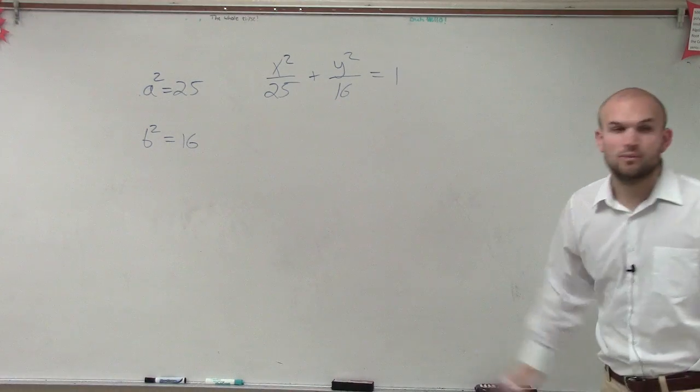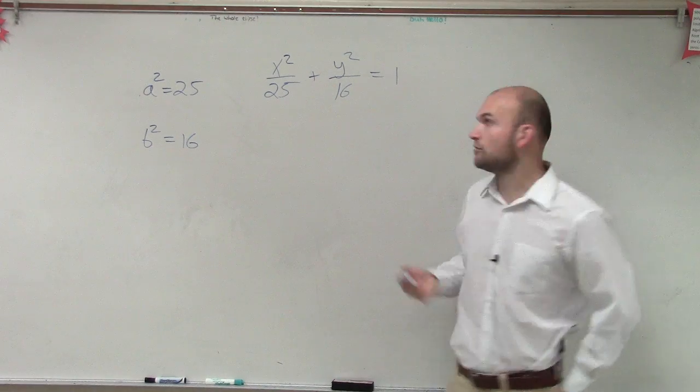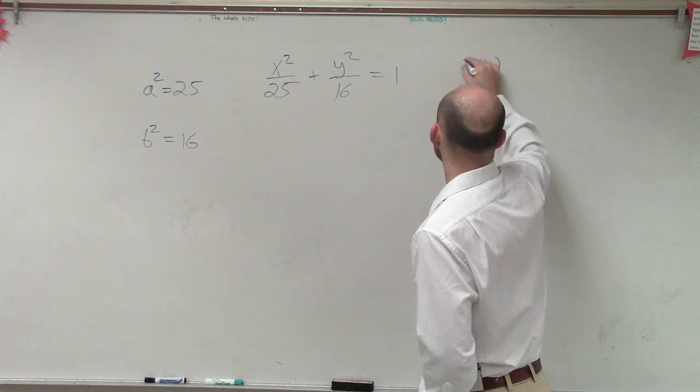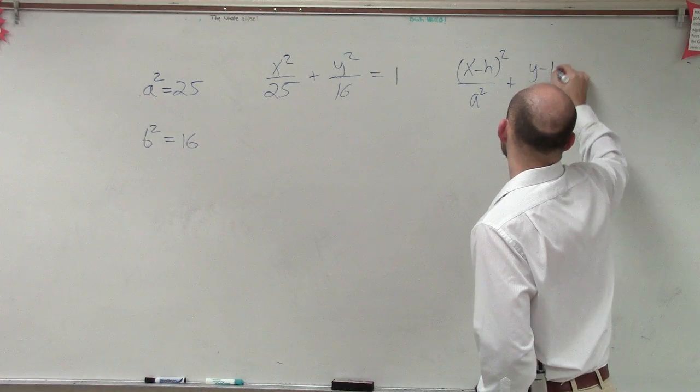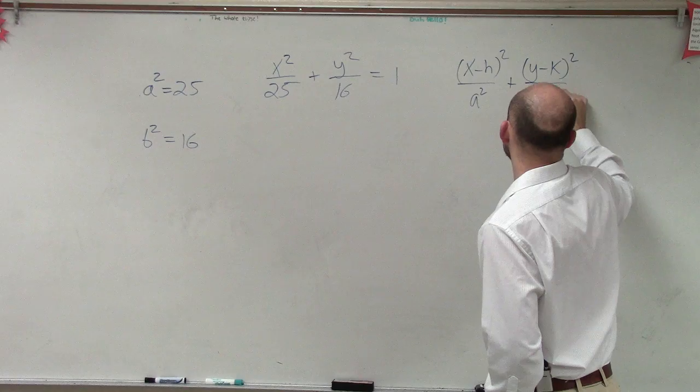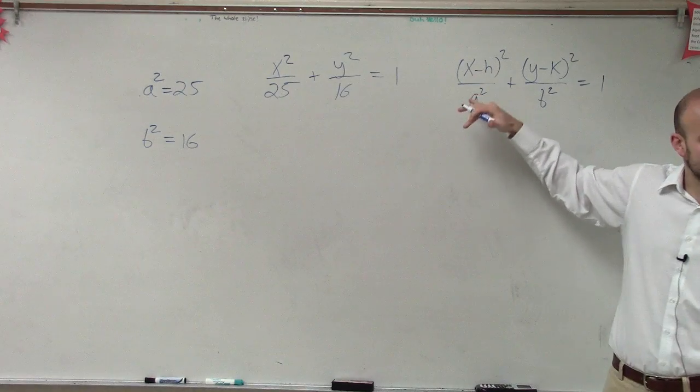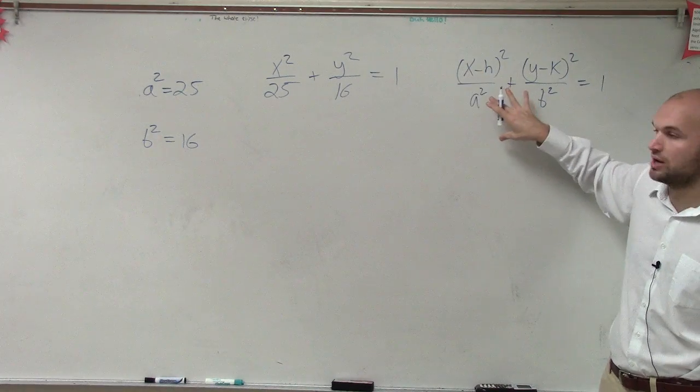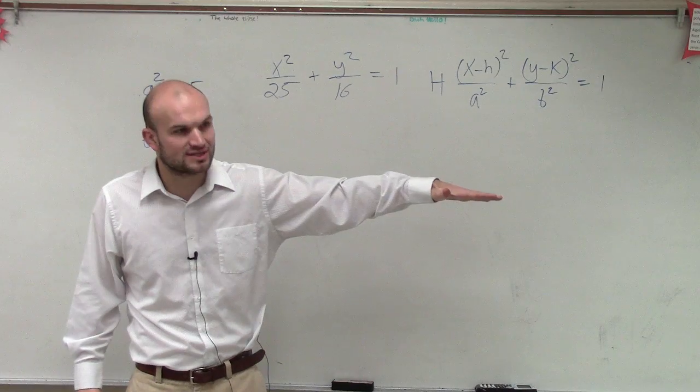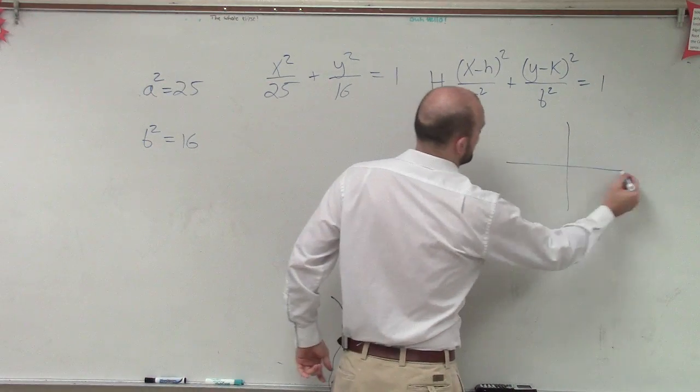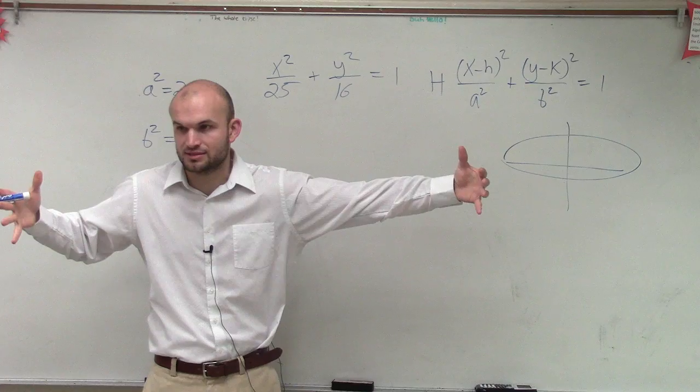Okay, so now that I know that this is my a squared is under my x, I'm going to write out that formula. So remember the formula goes x minus h squared divided by a squared plus y minus k squared divided by b squared equals 1. Since I know my a squared is under my x coordinate, this was the formula for an ellipse when we have the major axis is horizontal. So I don't know what my graph looks like, but I know it's going to look something like this. It's going to have a horizontal major axis.